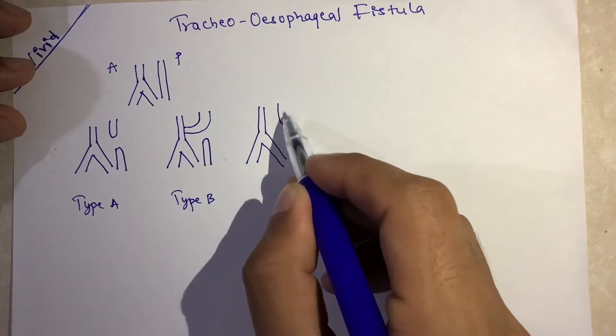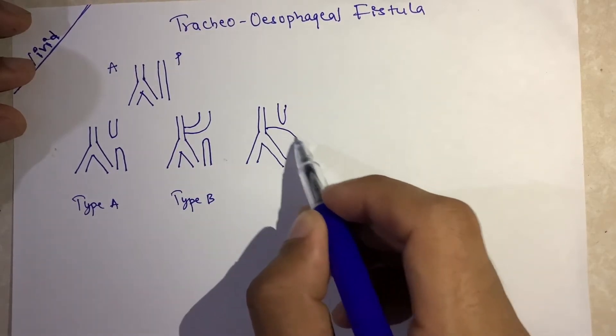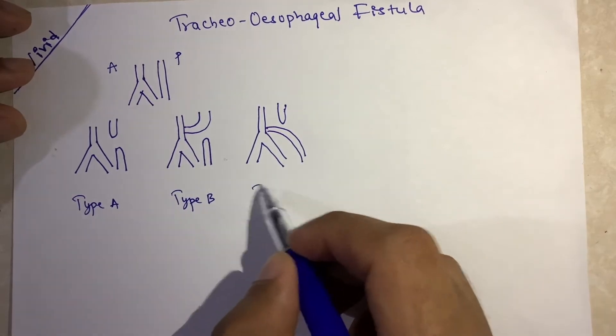In type C, the reverse happens. That is, proximal is blind and the distal makes continuity with the trachea. Type C.